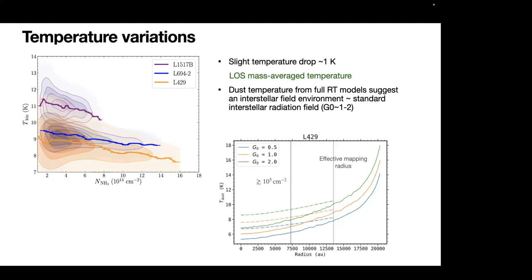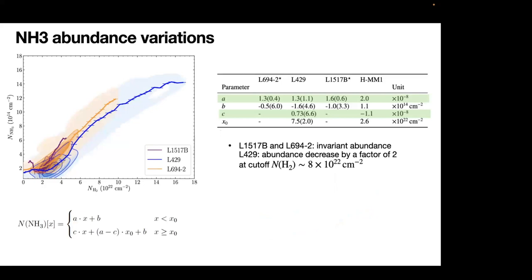Now coming to the abundance variations of ammonia, the figures here shows the variation of ammonia column density as a function of molecular hydrogen column densities of the three cores. In order to parameterize this trend of distributions, we use this segmented line model. In the low hydrogen column density regimes, we use the linear function to characterize its variation. And then up to some critical cutoff value, we use another linear function to characterize its variations. From this kind of experiment, we see that for one of the cores alpha to 9, we do have this abundance variations when the hydrogen column densities reach up to 8 times 10 to the 22.